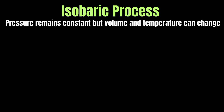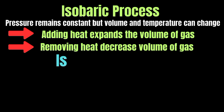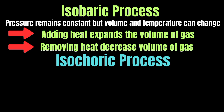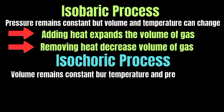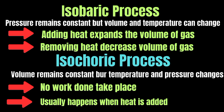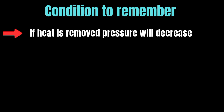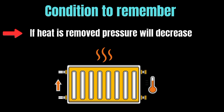An isobaric process is one where pressure remains constant, but volume and temperature can change. If heat is added, the gas expands, increasing its volume; if heat is removed, the gas contracts, decreasing its volume. An isochoric process is one where volume remains constant, but pressure and temperature change. Since the volume does not change, no work is done, and all the energy added or removed goes into changing the temperature and pressure. For example, if a gas is heated inside a closed cylinder, its volume will not change, but pressure increases as molecules move faster.